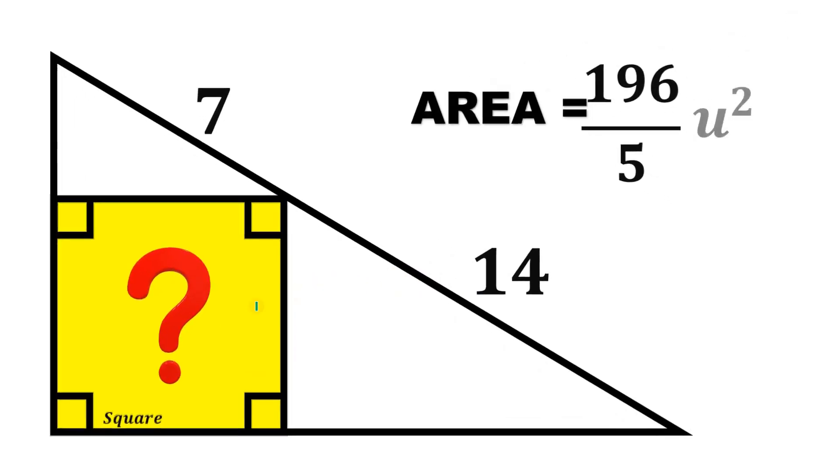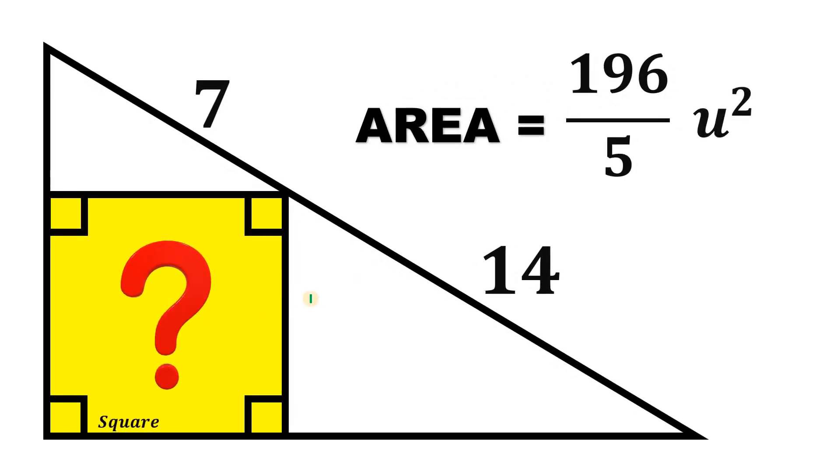Therefore, given this figure, then the area of the yellow square inside of our right triangle equals 196 over 5 square units. And as always, we are done.